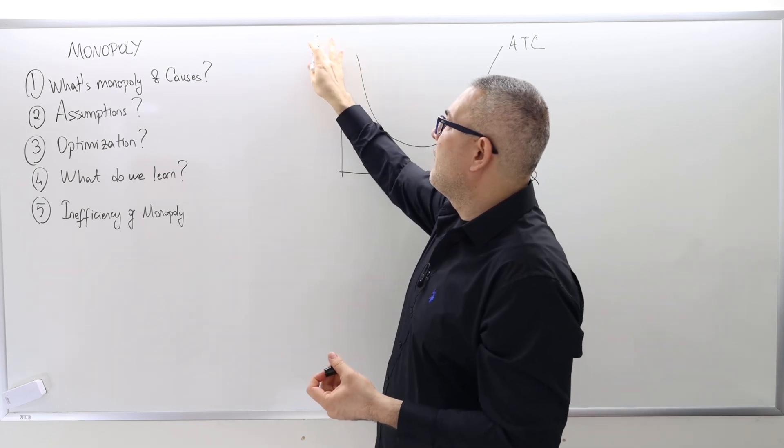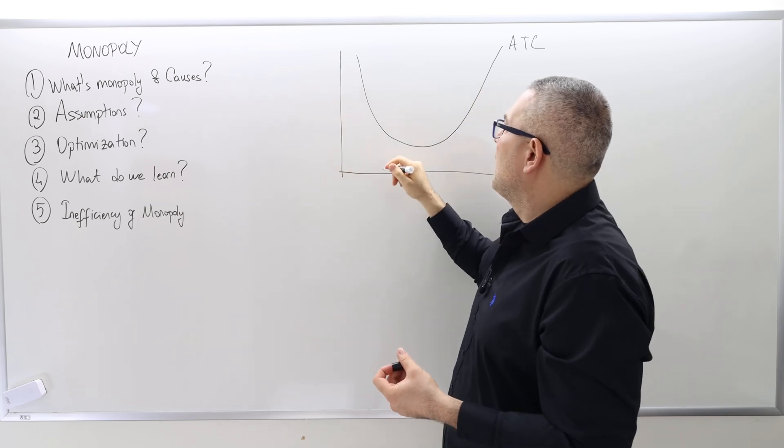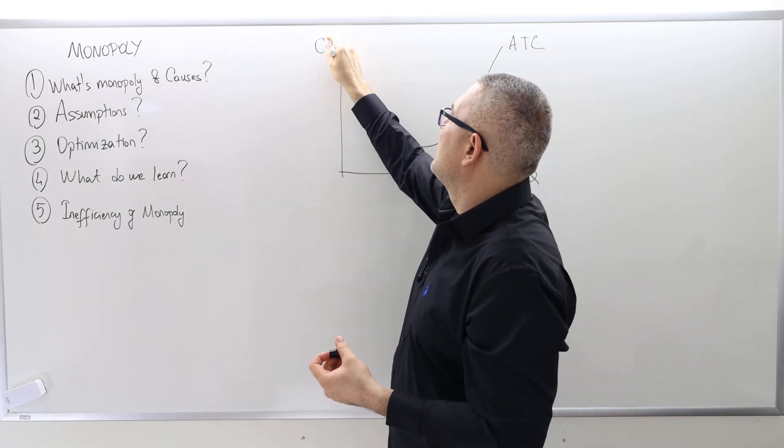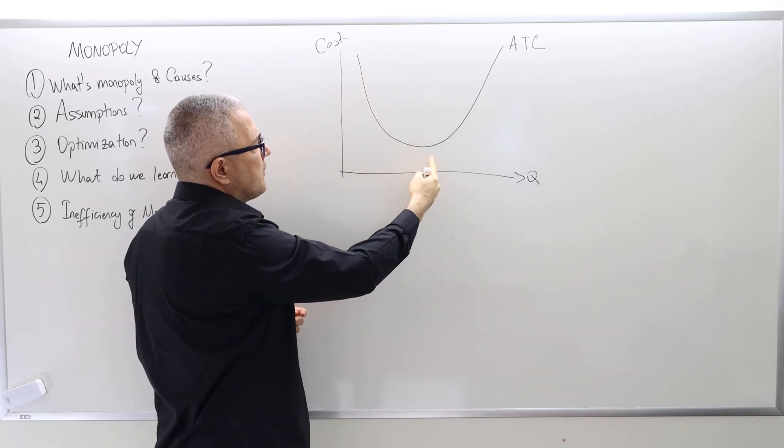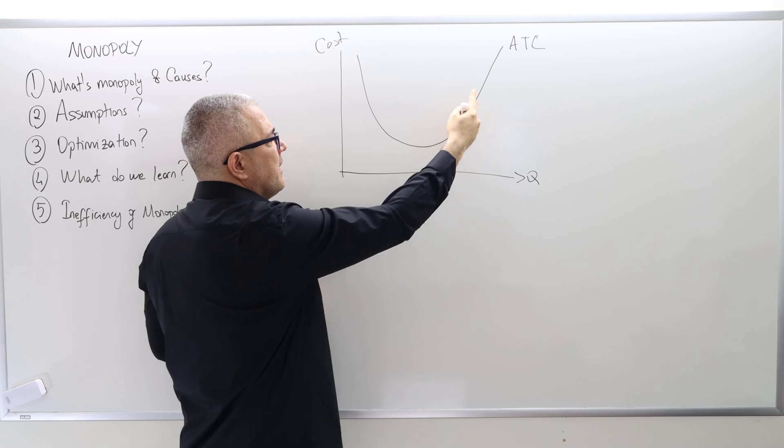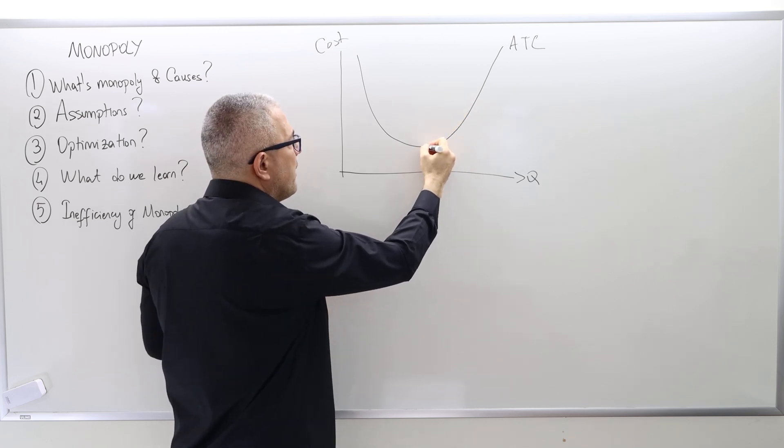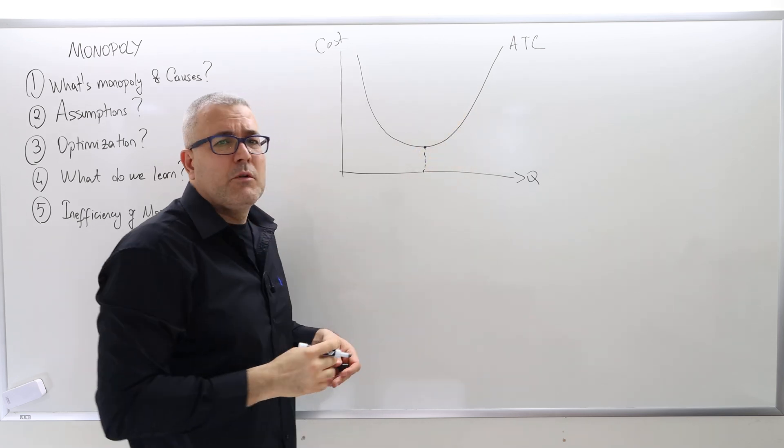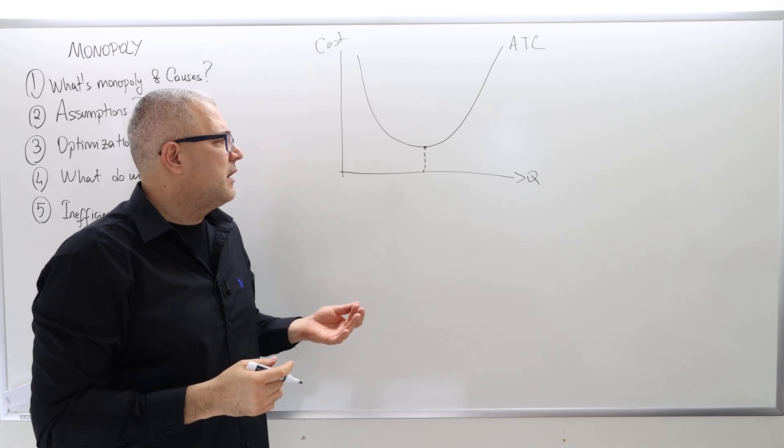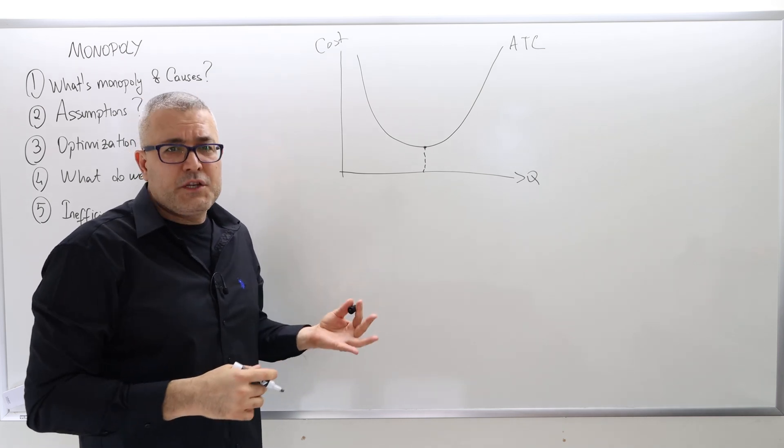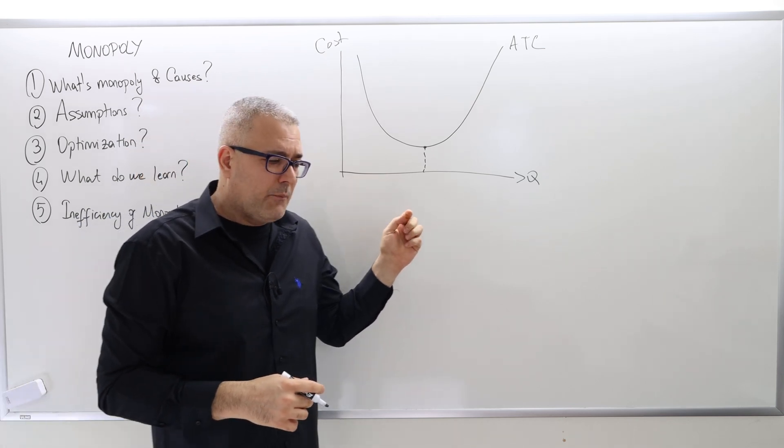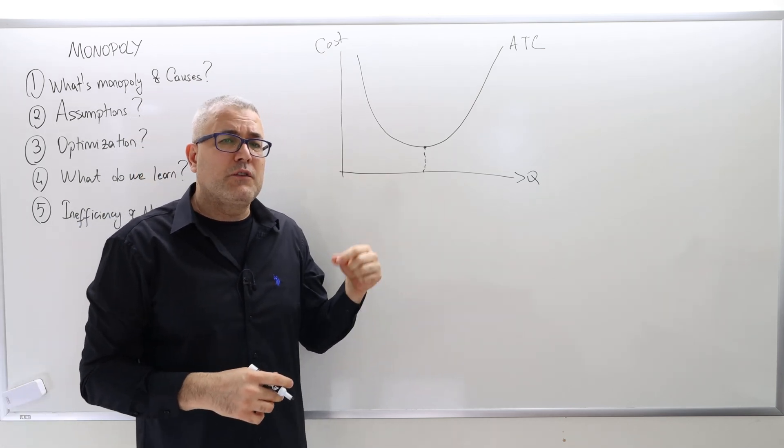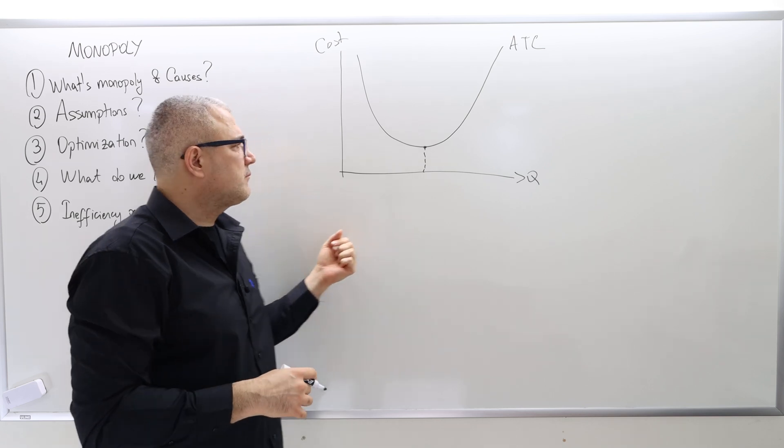So, as the quantity increases, the average total cost decreases and then it increases. And this point, which we call a minimum efficient scale or efficiency scale, that's the point where the perfectly competitive firms would like to produce in the long run.